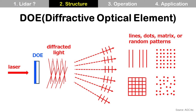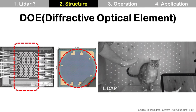These tiny geometrical structures on the surface of the DOE diffract IR light and make a matrix of dots for iPad and iPhone LiDAR. DOE can make lines, dots, or a matrix, and so on by design, depending on its applications. So you can see more dots on the target than pixel lasers in the LiDAR used in iPad and iPhone.